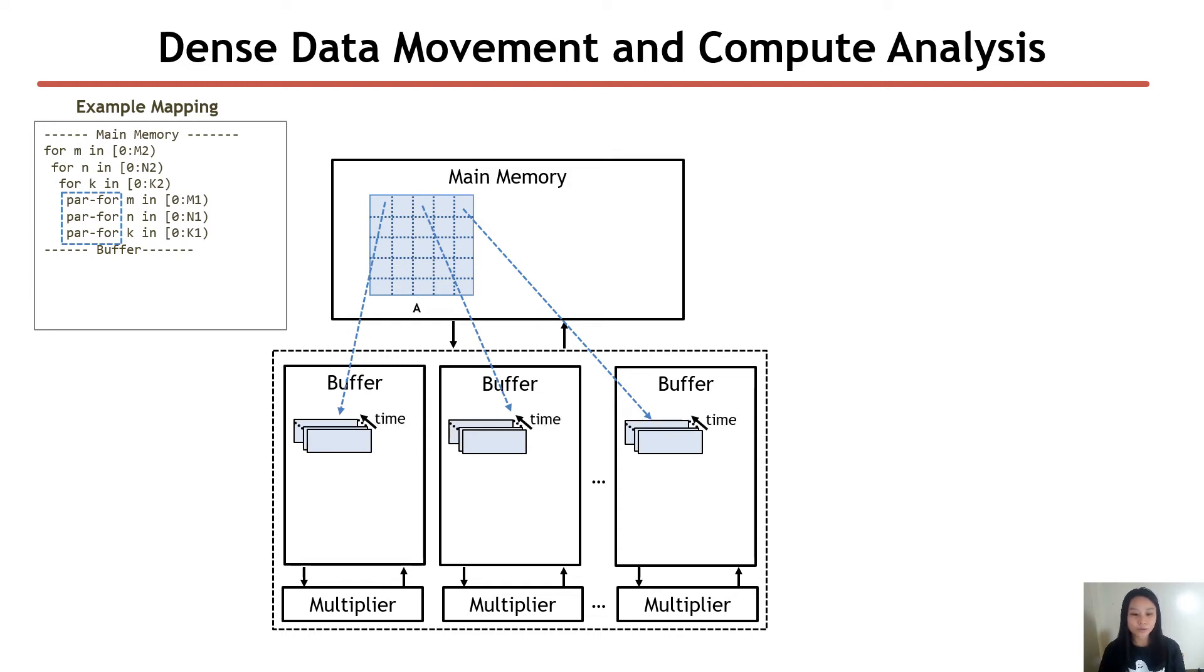And of course, across time, you would receive different subtensors from this main memory. This is what we call coordinate space tiling.